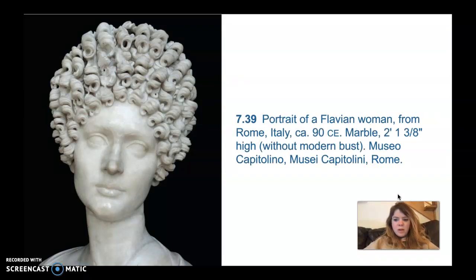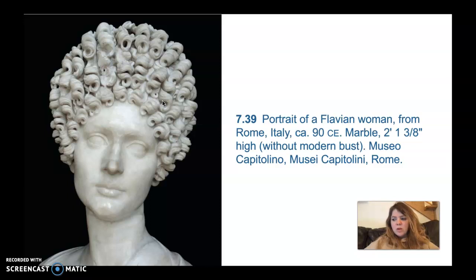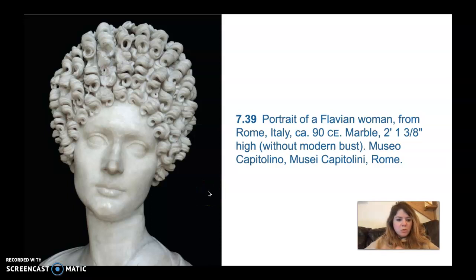This is a portrait of a Flavian woman from Rome, Italy, 90 CE, marble, two feet one and three-eighths inches high. During the Flavian period, people of all ages were deemed worthy of portraits, unlike the Republic where only older men were. This portrait's main purpose was to show the woman as beautiful and fashionable. She displays the popular Flavian coiffure hairstyle — corkscrew curls stacked on top of each other. The sculptor would have used a drill to carve each curl, and the use of a drill instead of a chisel became widely adopted at this point. The surface is highly polished, making her skin appear very smooth and gleaming.